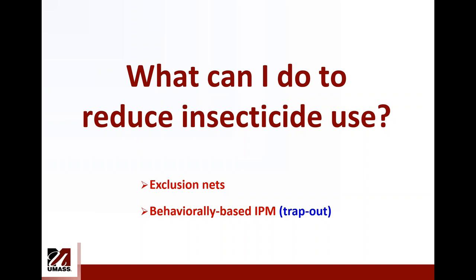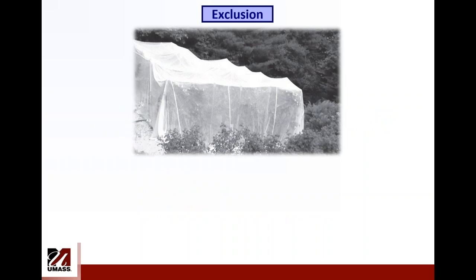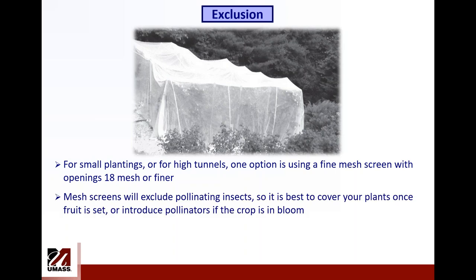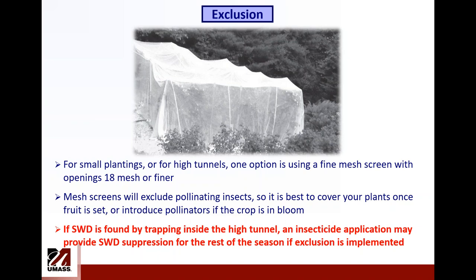To reduce insecticide use, I'll discuss two supplementary alternatives. The first is exclusion. For small plantings and high tunnels, one option is to use a fine mesh screen that excludes the fly while still allowing pollinators to access the crop for pollination. If you find spotted wing drosophila by trapping inside the high tunnel after installing the net, you may need to spray an insecticide once to clean up the tunnel, and then may not need to spray again against these insects. There are a number of studies in high tunnels showing this is a useful approach.